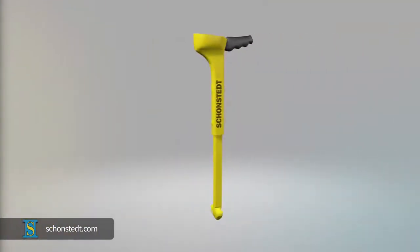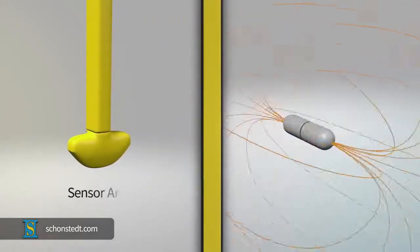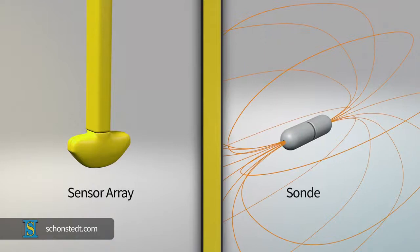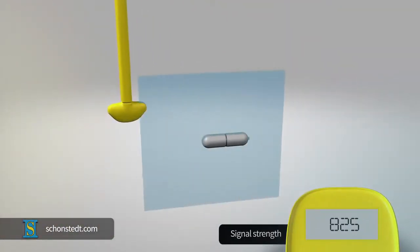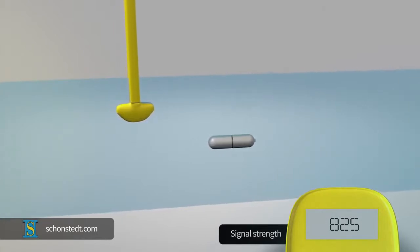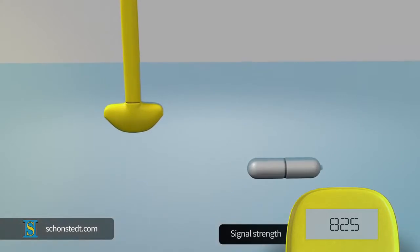In order to understand the techniques for approaching and pinpointing, it is important to understand the relationship between the orientation of the receiver sensor array and the sonde. The signal detected by the sensor array is strongest or peak when the axis of the sonde and the axis of the sensors in the receiver are on the same plane.